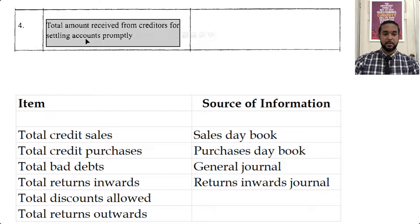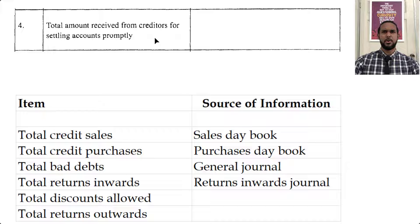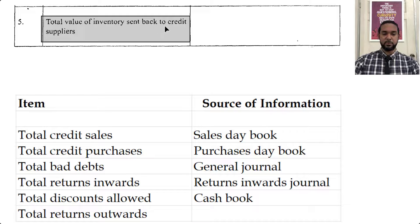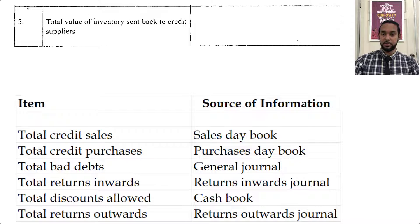Next: total amount received from creditors for settling accounts promptly — that sounds like discounts received, and discount received will be found in the cash book. Finally: total value of inventory sent back to credit suppliers — that's returns outwards, and that will be found in the returns outwards journal. Once you are familiar with your books of original entry, that part of the question should have been pretty easy.